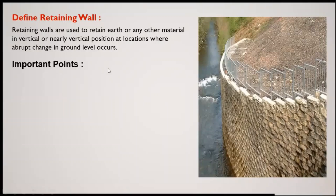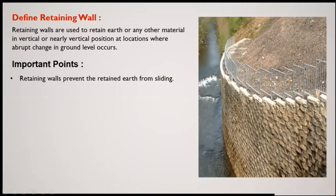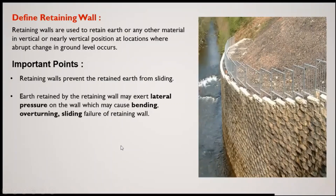An important function of a retaining wall is to prevent the retained earth from sliding. As shown where my cursor is moving, this is the backfill and this is the retaining wall. If the retaining wall is not present, this material will slide. The earth retained by the retaining wall exerts lateral pressure on the wall — that material will apply pressure on the wall and try to destabilize it, which may cause bending.